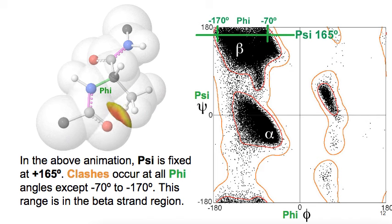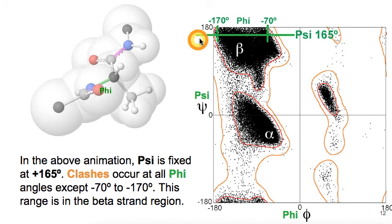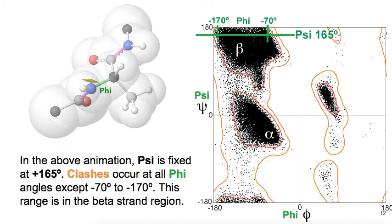Now let's compare our rotating phi animation with the Ramachandran plot. Remember that psi is fixed at 165 degrees. You'll notice that as phi rotates, there's only one region that has no clashes. Let's watch it.